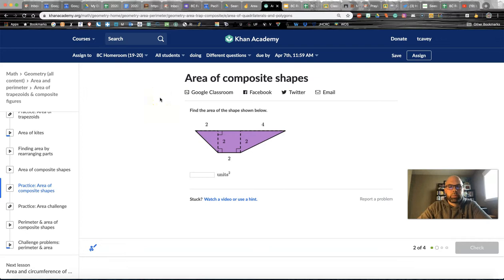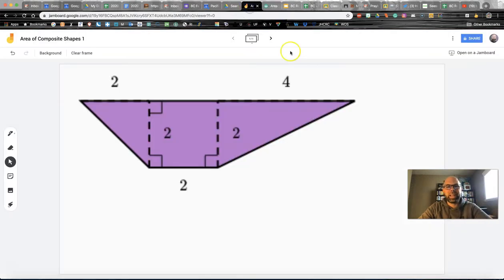So I've got this problem on Khan Academy, area of composite shapes. We're over here and we've watched a few videos hopefully. And the key, I can tell you right now, the key to finding the area is always about breaking these shapes into pieces.